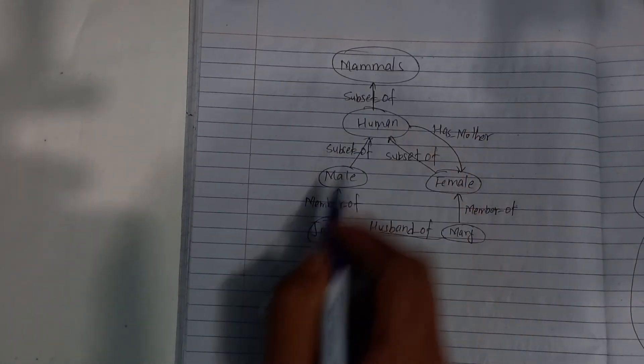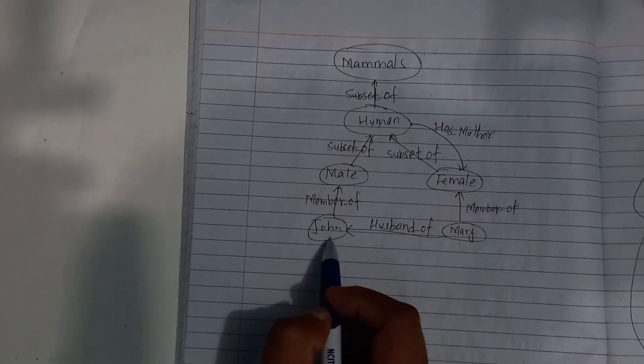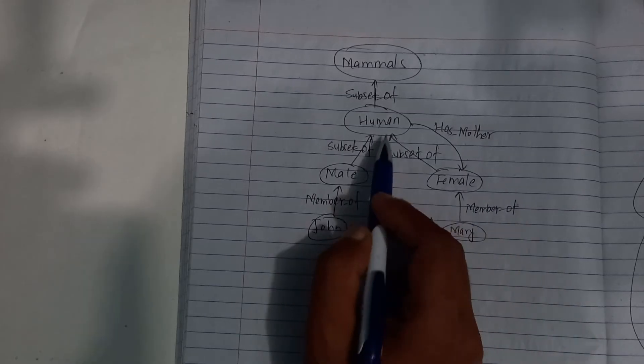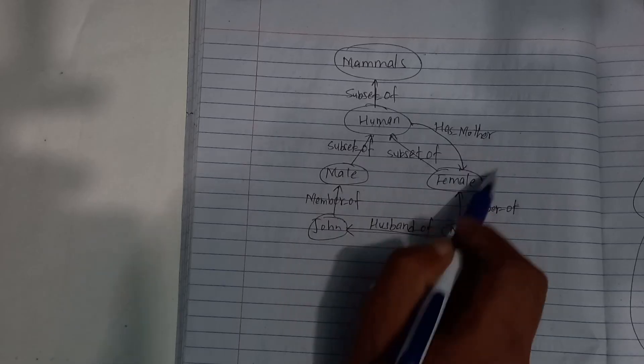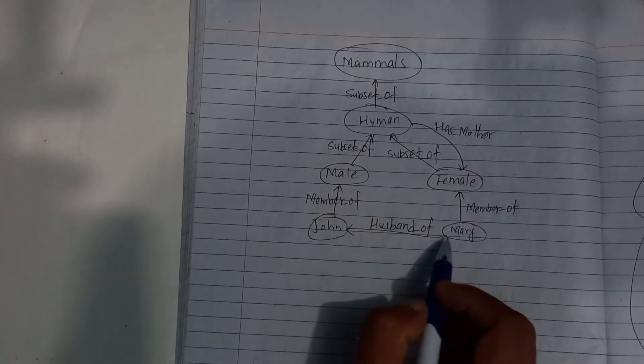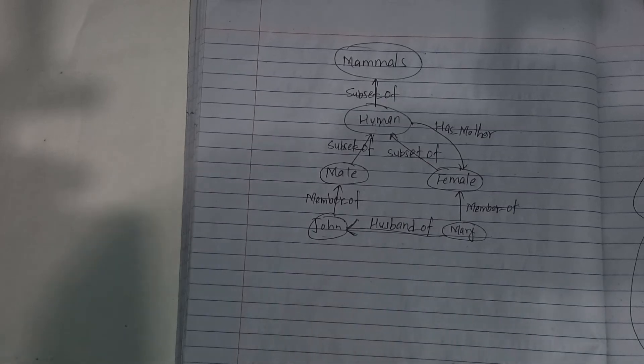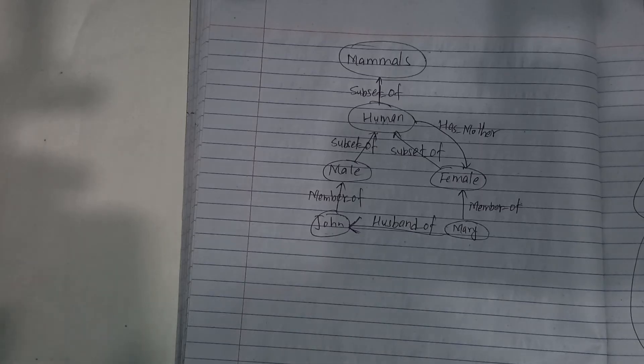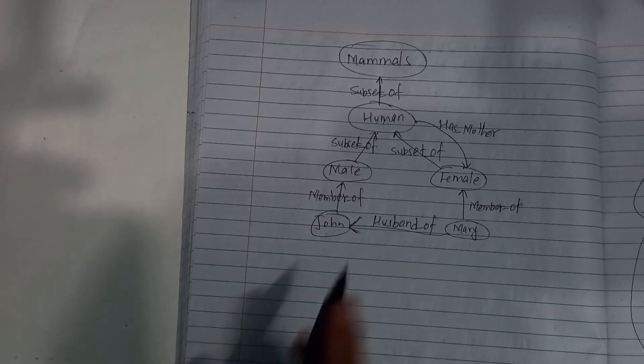Another example: Human is subset of mammals. Male and female are subsets of human. John is member of male, Mary is member of female. Human has mother who is female. John is husband of Mary. This shows how semantic net represents relationships.